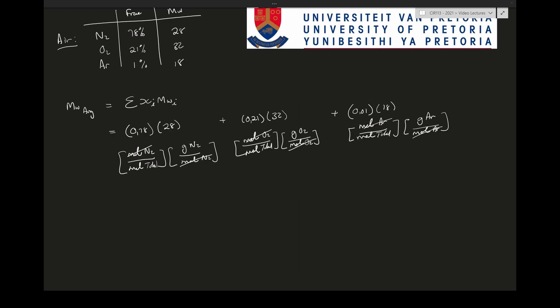Now multiplying everything out we have 21.84 gram N2 over moles total, 6.72 gram O2 over mole total, plus 0.18 gram argon over mole total. You can see if we add all these grams at the top together, because we have a common denominator at the bottom, we're going to have grams total over mole total, and this is the molecular mass again.